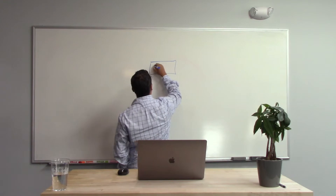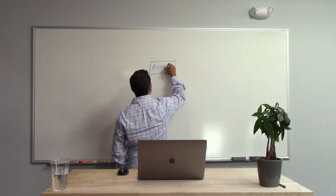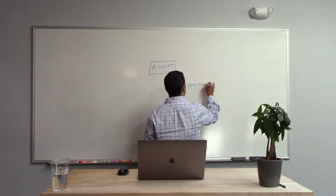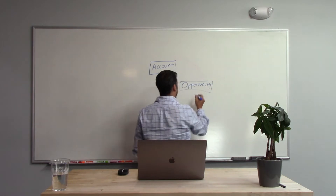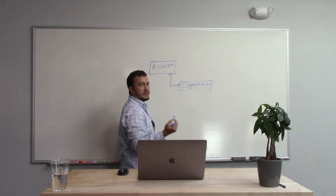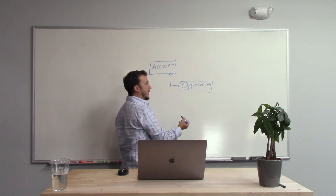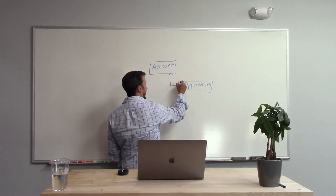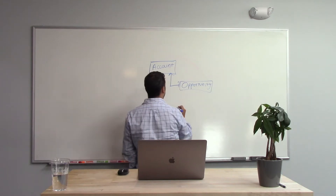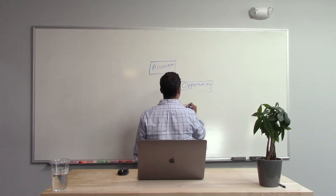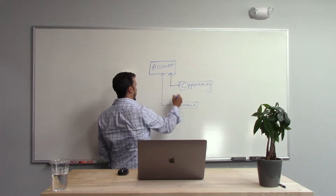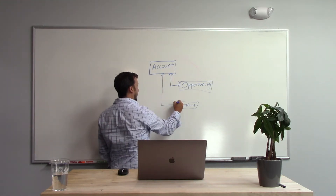We all know that we have Account and we have Opportunity, and we have a lookup from the Opportunity to the Account. This gives us a one-to-many relationship — one account can have many opportunities. We might put a 1 and an N over here, N meaning many. We also have a similar relationship between Account and Contact: one account can have many contacts.